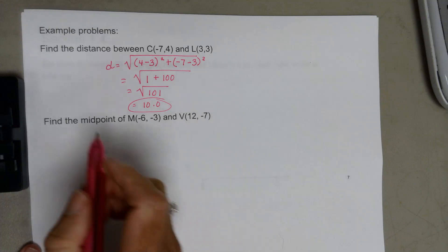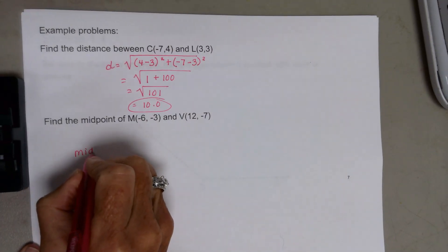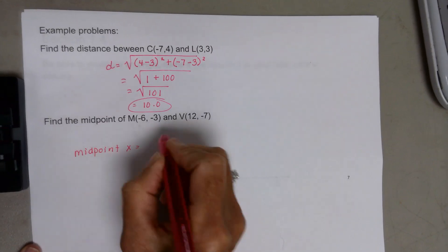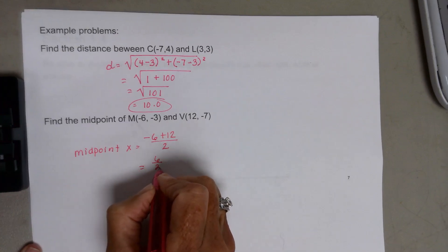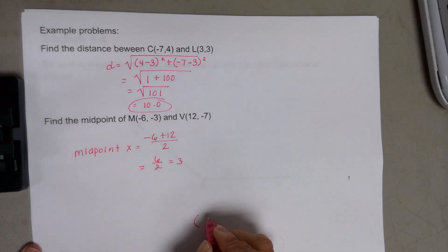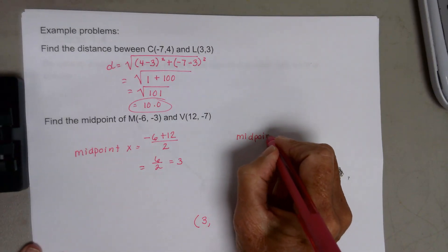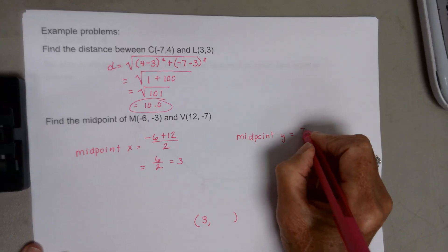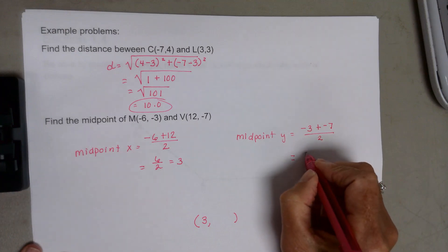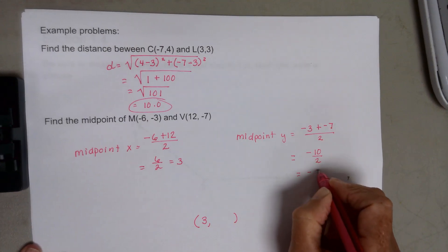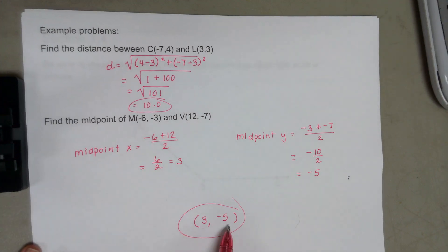To find the midpoint between two points — the ordered pair exactly in the middle — midpoint x = (−6 + 12) ÷ 2 = 6 ÷ 2 = 3. Then for y: midpoint y = (−3 + (−7)) ÷ 2 = −10 ÷ 2 = −5. So the point exactly in the middle between those two points is (3, −5).